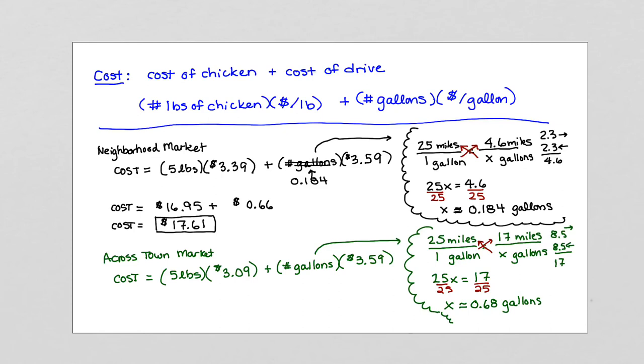Let's put that back in our problem. So instead of the number of gallons, we're actually going to replace that with 0.68. And now, make our calculation. The cost to travel across town to the market is equal to 5 times 3.09, which is $15.45, plus 0.68 times $3.59, which gives us $2.44. Make sure you round to the nearest cent, or hundredth. The total cost for that trip, then, to buy 5 pounds of chicken across town is $15.45 plus $2.44 for a whopping total of $17.89.